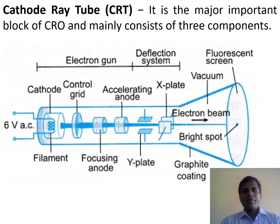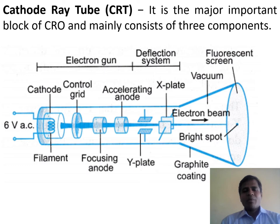The cathode ray tube, which is also called the heart of the cathode ray oscilloscope, is the most important block of the CRO and mainly consists of three components: namely the electron gun, the deflection system, and the fluorescent screen. On the screen, we can see the block diagram of the CRT.